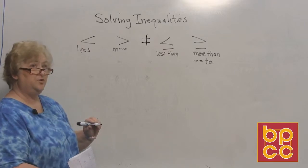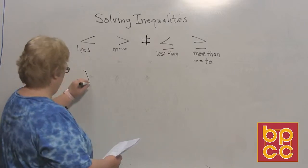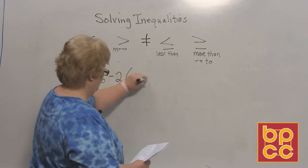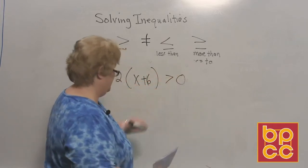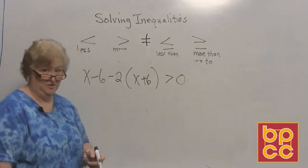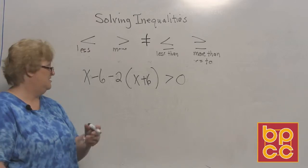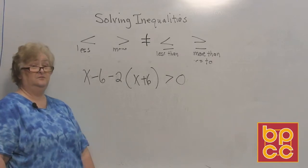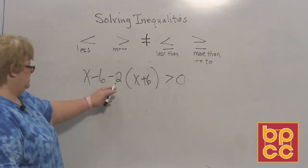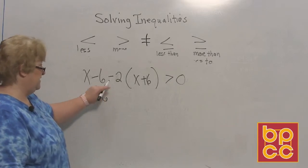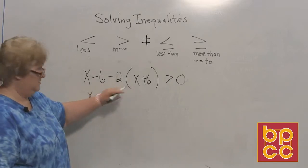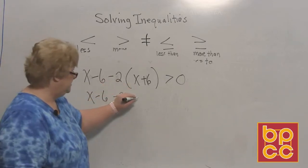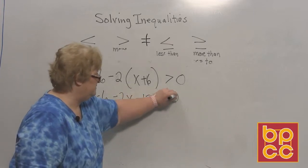Here we have distribution and combining like terms: x minus 6 minus 2(x plus 6) is greater than 0. Everything is on the left-hand side. First, distribute: x minus 6, then negative 2 times x is negative 2x, and negative 2 times positive 6 is negative 12. So we have x minus 6 minus 2x minus 12 is greater than 0.